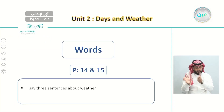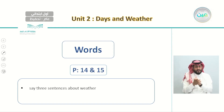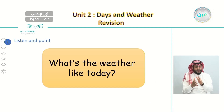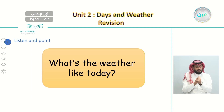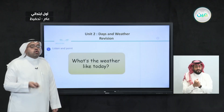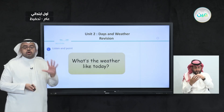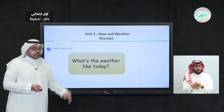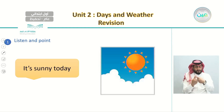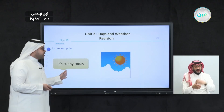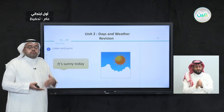Our third lesson in this unit is called Words, on pages 14 and 15. Our objective was to say at least three sentences about weather. We answered the question 'What's the weather like today?' and learned five different types of weather. The first answer is 'It's sunny today,' when we can see the sun. The second is 'It's cloudy today,' when we can't see the sun and only see clouds.